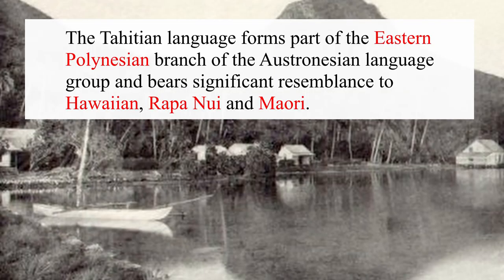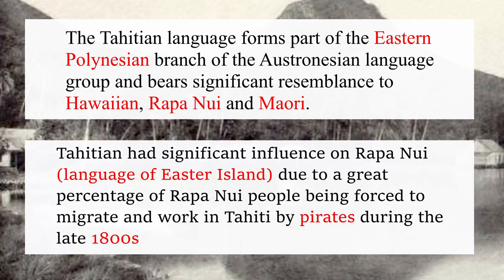The Tahitian language forms part of the Eastern Polynesian branch of the Austronesian language group, and bears significant resemblance to many Polynesian languages. Tahitian had significant influence on Rapa Nui, the language of Easter Island, due to a great percentage of Rapa Nui people being forced to migrate and work in Tahiti by pirates during the late 1800s. It does have a lot of the same grammar, similar phonology, and shared vocabulary as other Polynesian languages do.